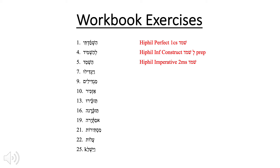What about number seven? Number seven is a Hiphil imperfect — this is a wayyiqtol. We have the vav conjunction on the front that is actually converting it; sometimes it's called the vav conversive because of that. So even though it's an imperfect, instead of translating it as a future, we usually translate it as a past. We see the hirik yod in the middle, which is a dead giveaway that this is a Hiphil. And again, you have the patah under the performative yod. The shuruq at the end indicates that this is third masculine plural.